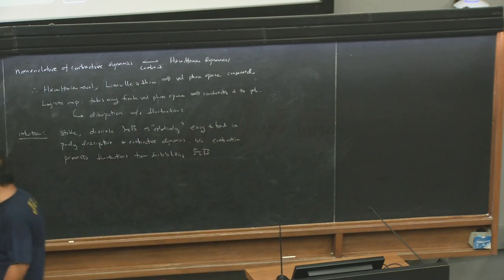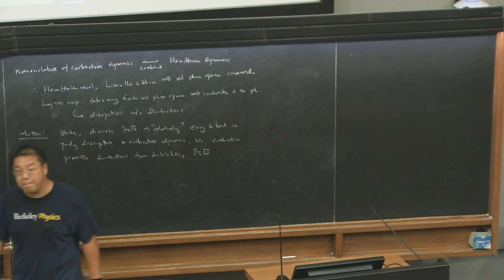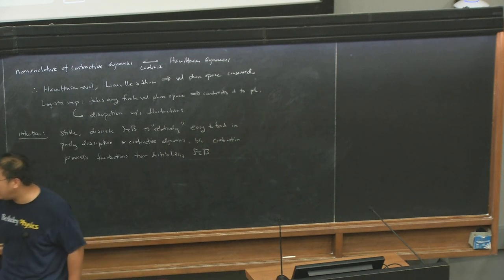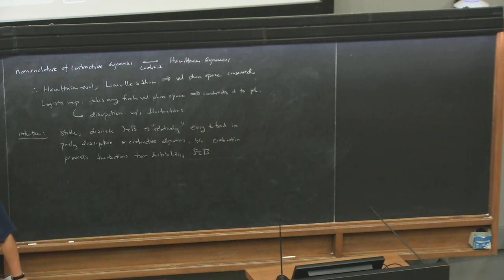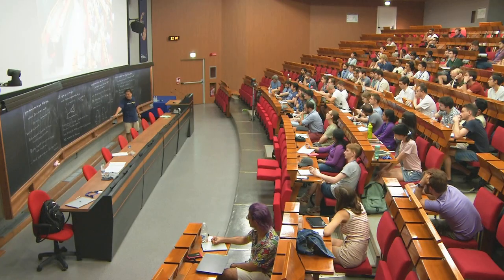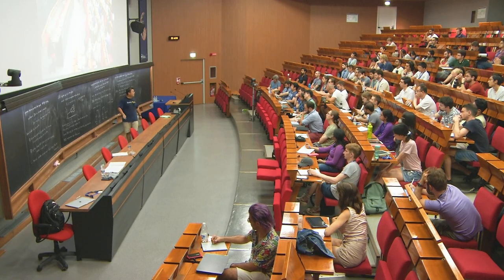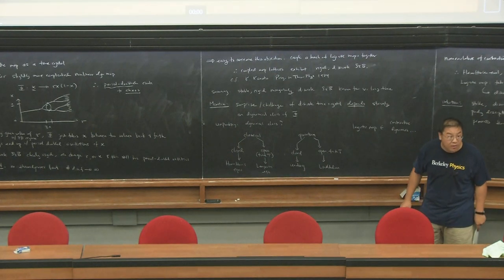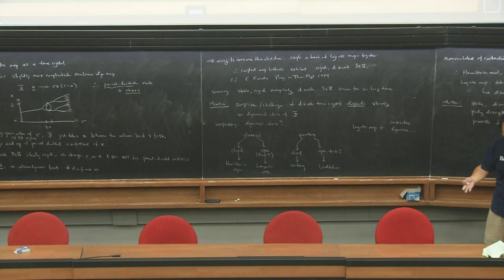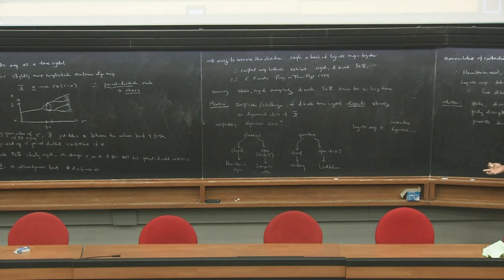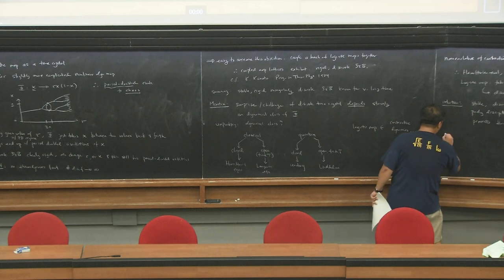What we are interested in — and what modern research topics are interested in — is whether or not you can get discrete STTSB in any of the four physically motivated dynamical classes: Hamiltonian, Langevin, unitary, or Lindbladian. It turns out that's very hard. And the reason it's very hard is the ubiquity of ergodicity. Let's continue following our nose.